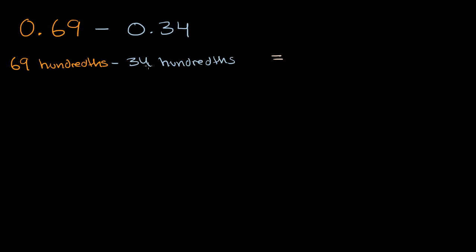Well what's 69 minus 34? Well nine minus four is gonna be five, and 60 minus 30 is going to be 30, so I'm left with 35 hundredths, which I can write as 0.35.